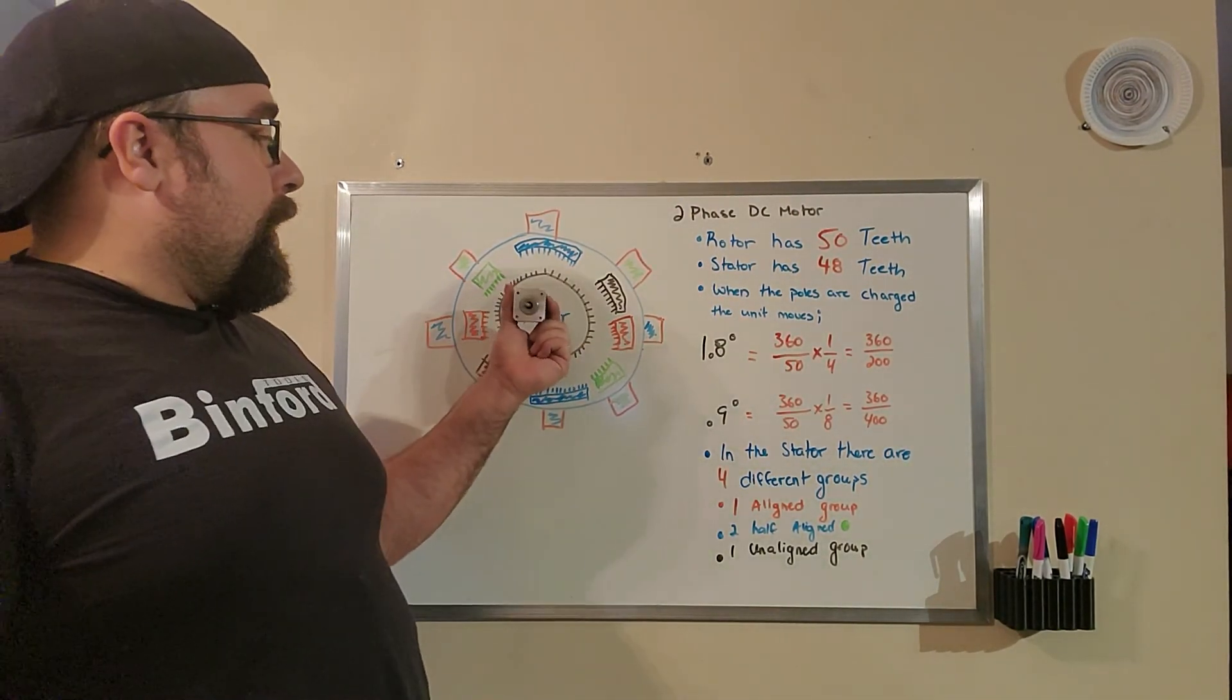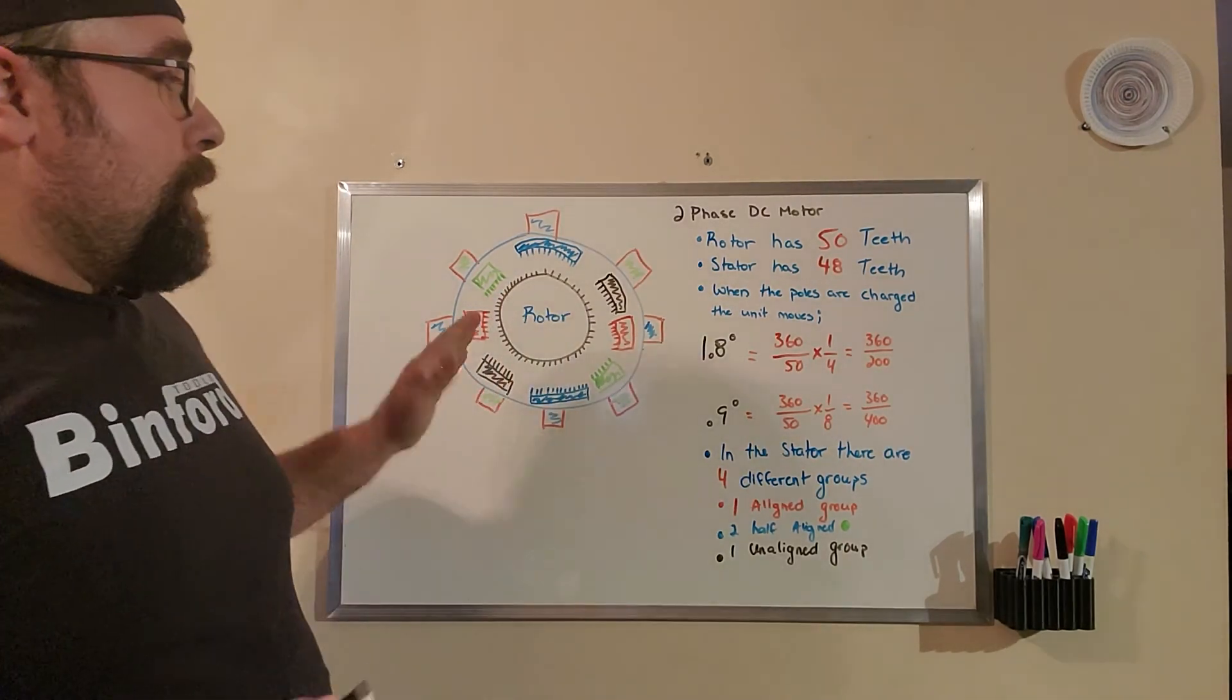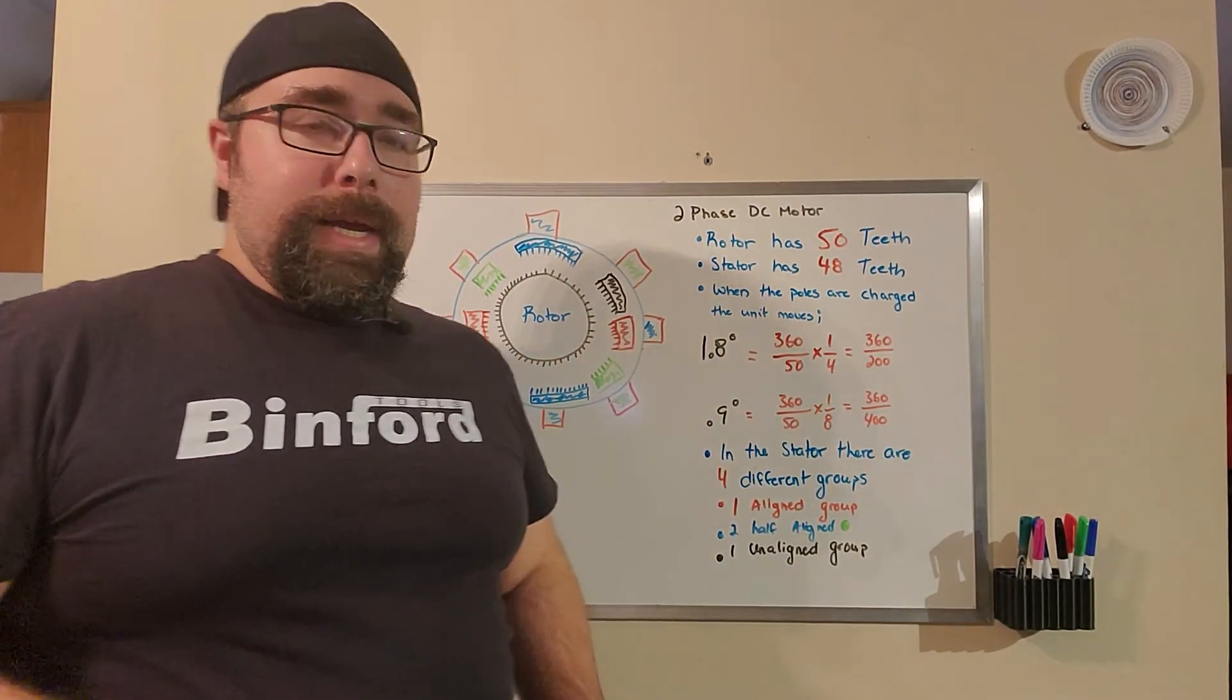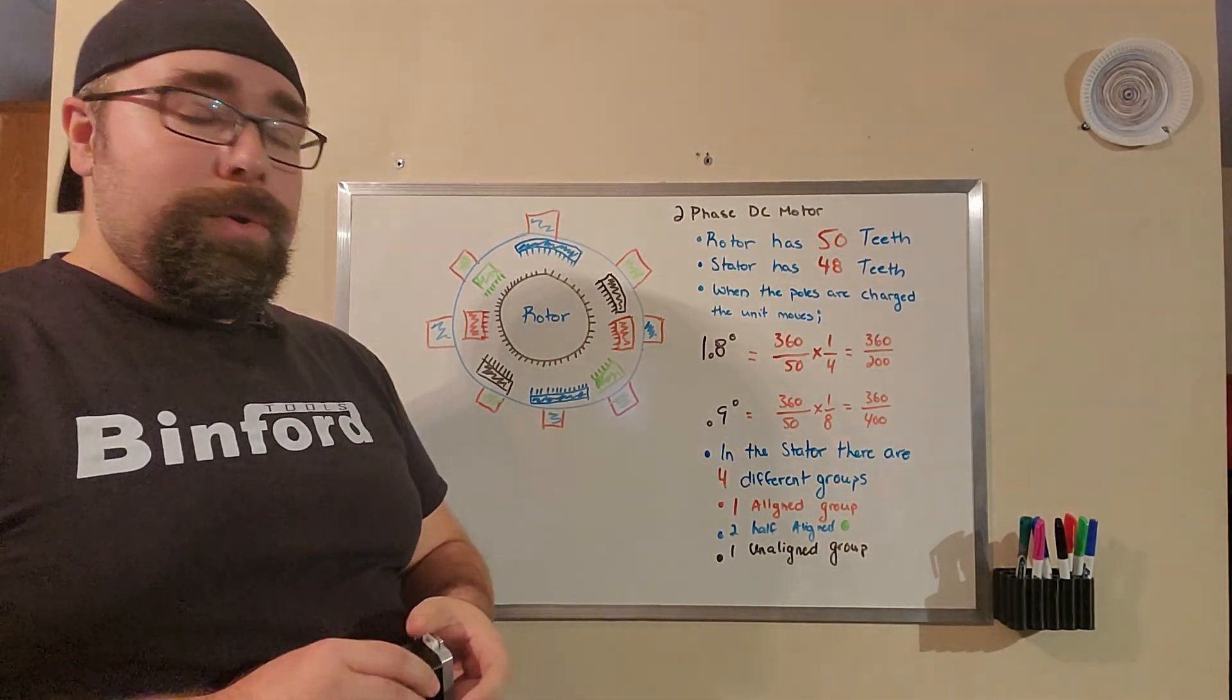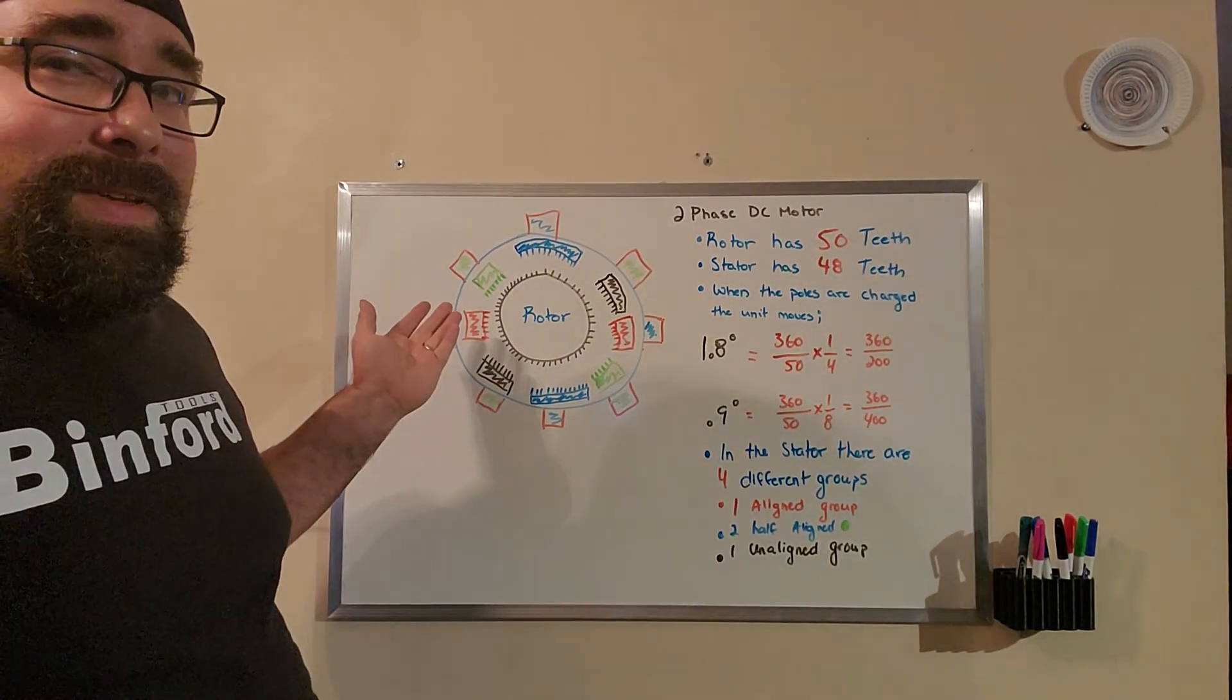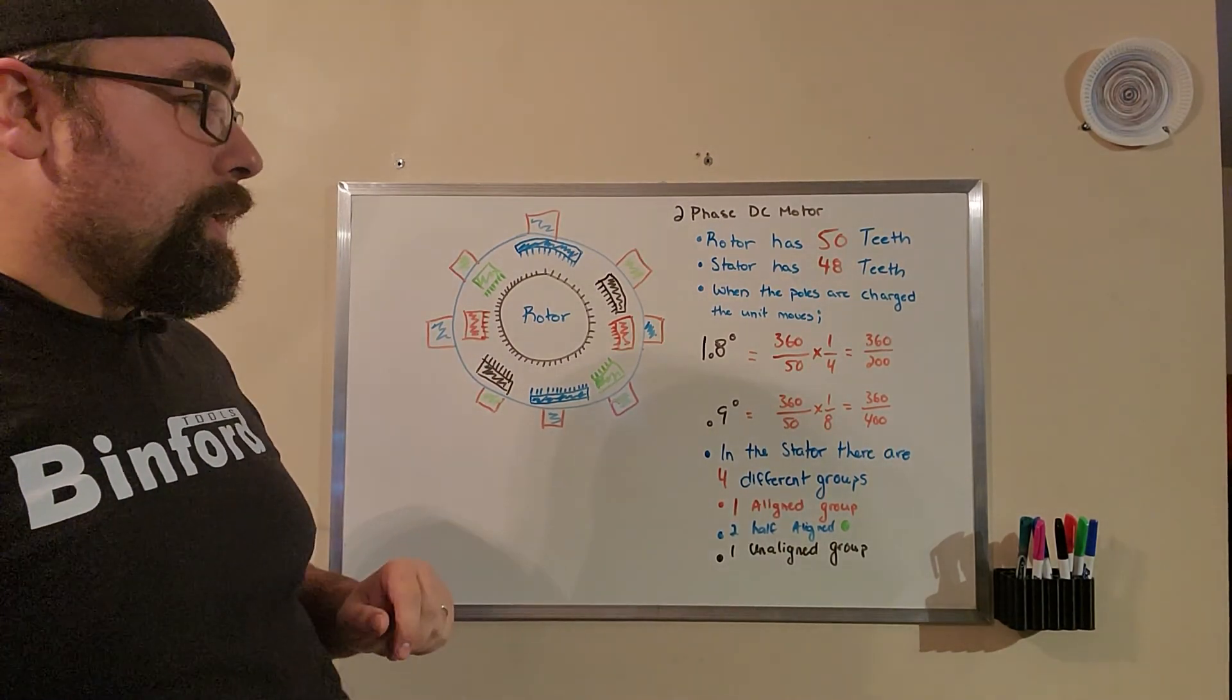We're going to look right down the shaft of the motor in this image here, and we're going to see right away that the rotor has 50 teeth. Look at all those teeth, and the stator has 48 teeth that are broken up into four different groups for a 1.8 degree motor. It's actually eight different groups with a 0.9 degree motor. Now you would assume that these teeth are going to be aligned to the teeth in the rotor, but they're actually not.